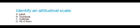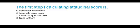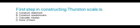Attitude scales are Likert, Thurstone, and Guttman. The first step in calculating an attitudinal score is: administer statements, assemble statements, construct questionnaire, or none of them. The correct answer is assemble statements. The first step in constructing a Thurstone scale is: construct statement, construct questionnaire, calculate median, or none of them. The correct answer is construct statement.